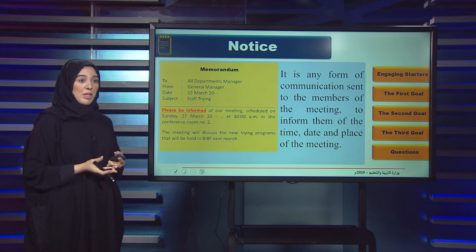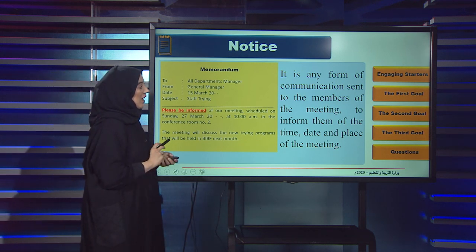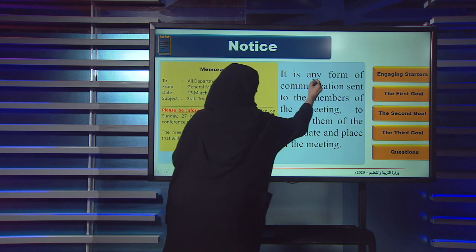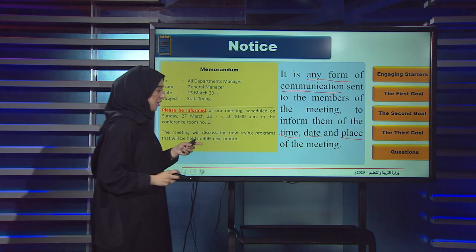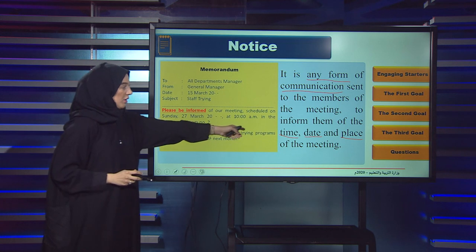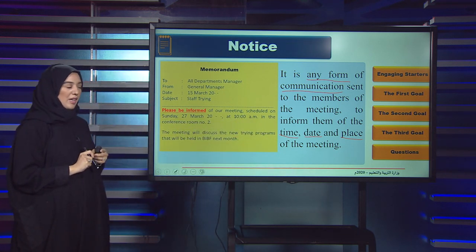Now let's start with our first objective: Notice. What do I mean by notice? Notice is any form of communication sent to the members of a meeting to inform them about the time, date, and place of the meeting. These are the four important things that you have to consider when sending a notice.